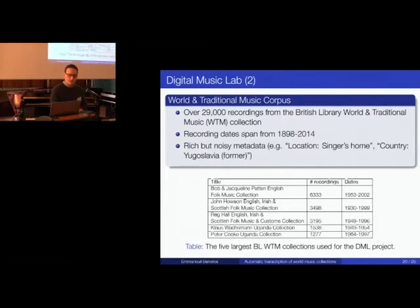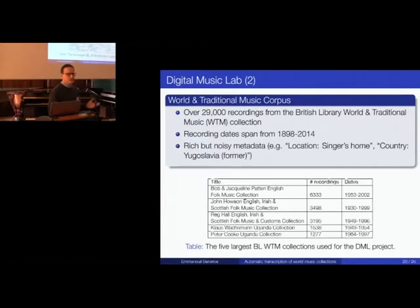We also had access to very rich but really noisy metadata. For example, there was the issue of having Yugoslavia listed as a country, which no longer exists — a very relevant problem we had to face. When we're talking about geolocations it's not simply a spatial issue but a spatio-temporal problem. A PhD student at Queen Mary spent a lot of time annotating and curating that metadata, and we don't have that much expertise in metadata — something hopefully some of you could help us with.